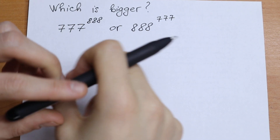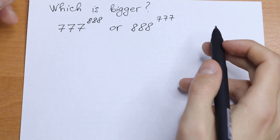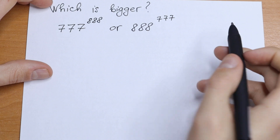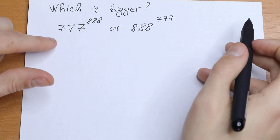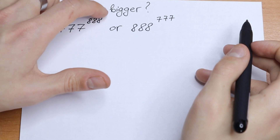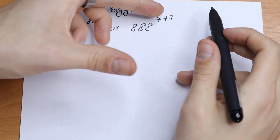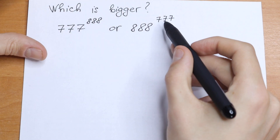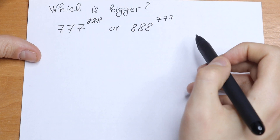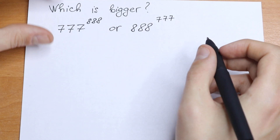Hello everyone! Welcome back to MathMoon! Today we have an interesting algebra problem. Which one is bigger: 777 to the 888 power, or 888 to the power 777? How can we compare this? How can we solve it?